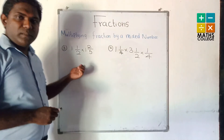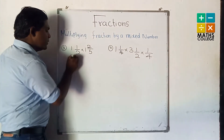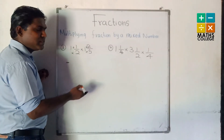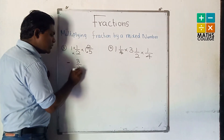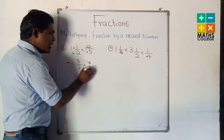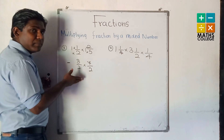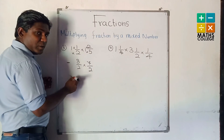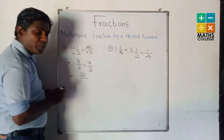Third one: you have two mixed numbers. Convert both to improper fractions first. 2 multiplied by 1 plus 1 gives 3 upon 2. 5 multiplied by 1 plus 2 gives 7 upon 5. Wait — second mixed number denominator gives 7 upon 2. Then multiply: 3 multiplied by 7 is 21, and 2 multiplied by 2 is 4.